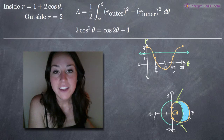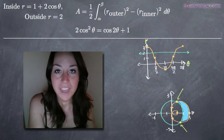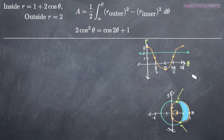Today we're going to be finding the area between two polar curves. In this particular problem, we've been asked to find the area that lies inside the polar curve r equals 1 plus 2 cosine theta and at the same time outside the polar curve r equals 2. I've gone ahead and graphed both of the polar curves first on a Cartesian plane and then on a polar coordinate system.